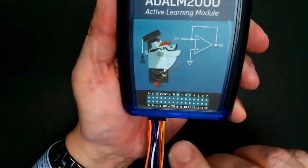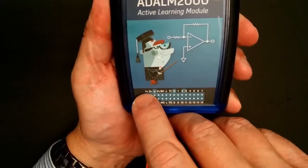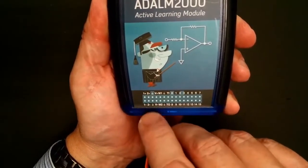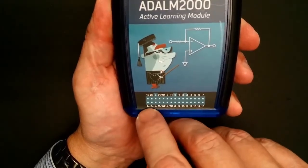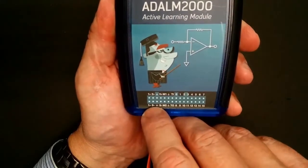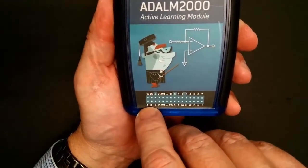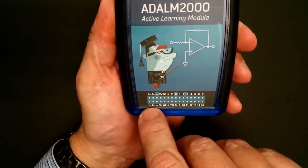If you look here, each pin is labeled for what its functionality is. 1 plus, 2 plus are the inputs to the oscilloscope and the voltmeter. 1 negative, 2 negative are the lower inputs, or the grounds, or the negative side of the inputs for the oscilloscope and the voltmeter.